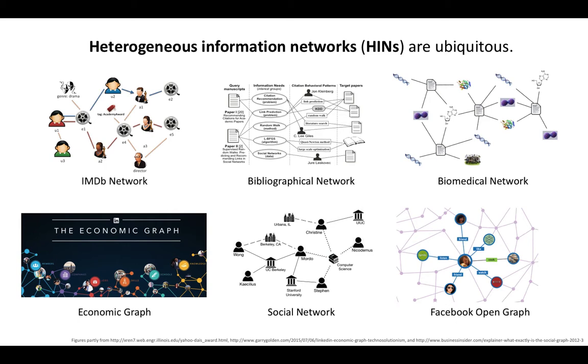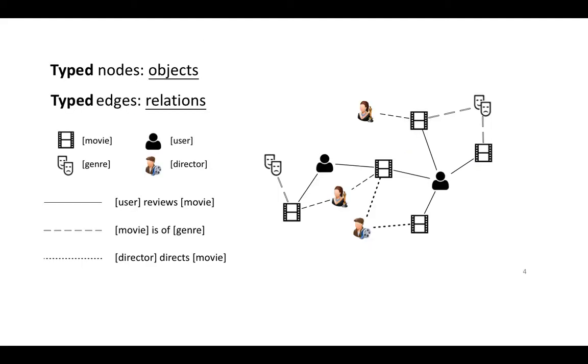In real-world applications, heterogeneous information networks are everywhere. As an example, in this toy movie reviewing network, objects of different types can have different relations which form an HIN. However, an easy-to-use HIN representation is still an unsolved problem.